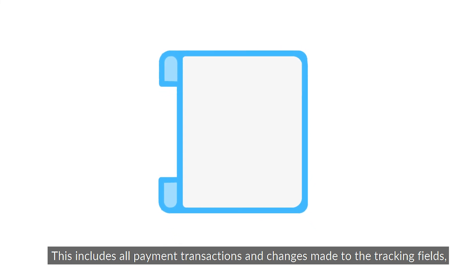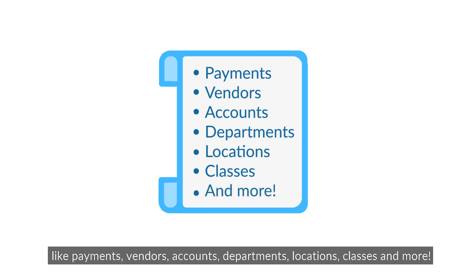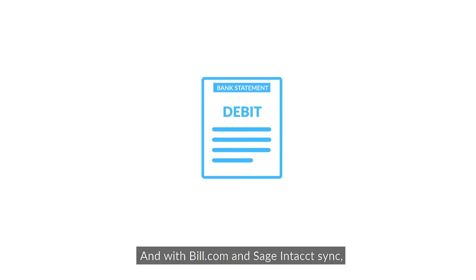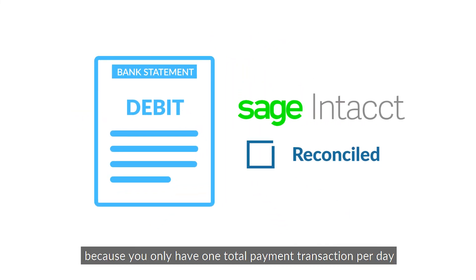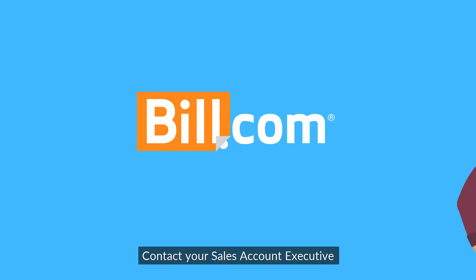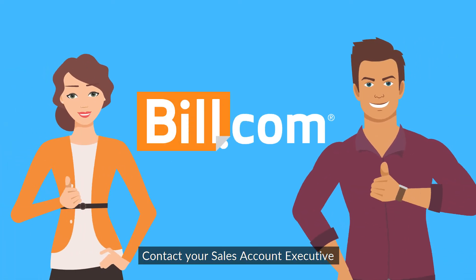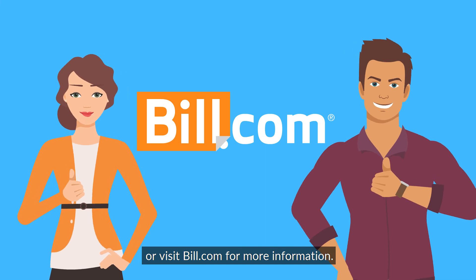This includes all payment transactions and changes made to tracking fields like accounts, departments, locations, classes, and more. With the Bill.com and Sage Intacct sync, bank reconciliations are easier than ever because you have one total payment transaction per day covering all your activity. Ready to get started? Contact your sales account executive or visit Bill.com for more information.